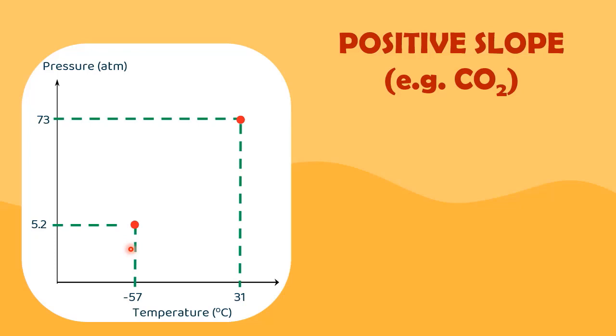The triple point for carbon dioxide is negative 57 degrees C and 5.2 atm, whereas the critical point is located at 31 degrees C and 73 atm. Having these two points will eventually aid you in sketching the phase diagram.